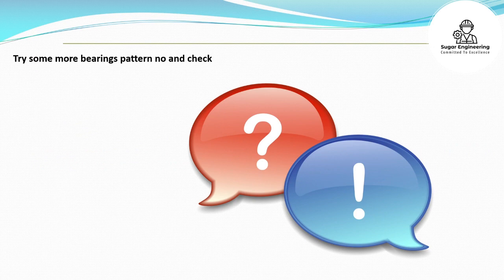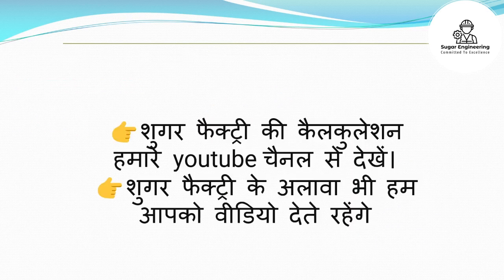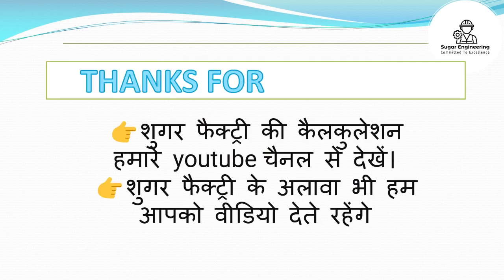Try some more bearing pattern numbers and check how accurate you are — comment the answer. Try these: 6205Z, 6304ZZ, and 7205Z.